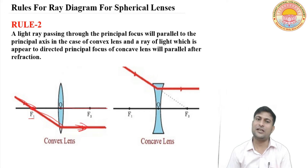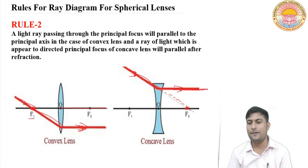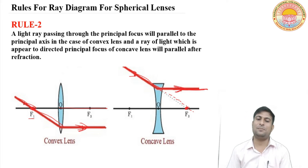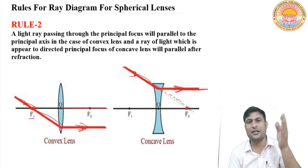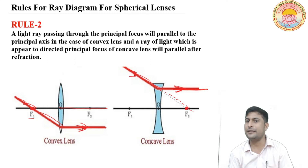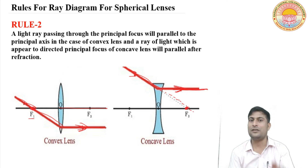This is the second rule for spherical lenses. A light ray which is directed towards the principal focus of the concave lens — then after refraction it will be parallel to the principal axis. If a light ray is parallel to the principal axis then after refraction it will pass through the principal focus, or it will be directed towards the principal focus of the concave lens. If a light ray is passing through the principal focus of the convex lens, or a light ray is directed towards the principal focus of the concave lens, then after refraction it will be parallel to the principal axis.